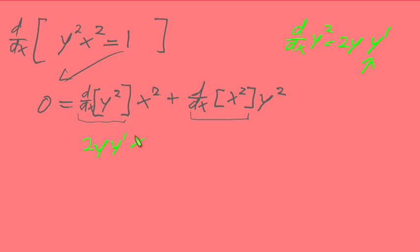2y y prime x squared plus d by dx of x squared. What is d by dx of x squared? Well, it's 2x. And to be rigorous, you could even say it's 2x times x prime. But we already know that this equals 1.